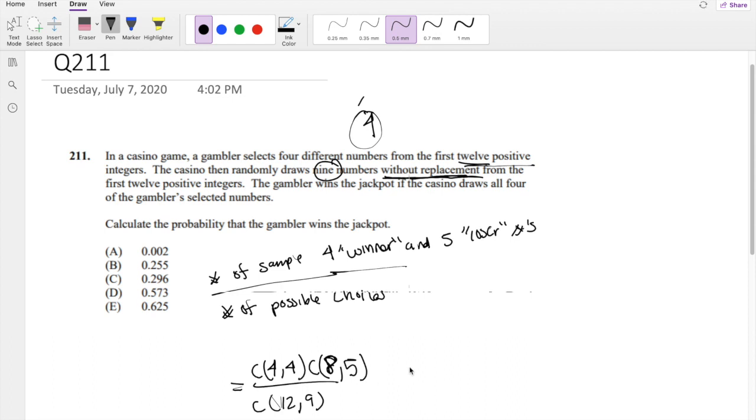So then this is equal to - 4 choose 4 is just 1. So 8 choose 5 is 56 divided by 12 choose 9, which is 220. Which is approximately equal to 0.2545, which is your answer B.